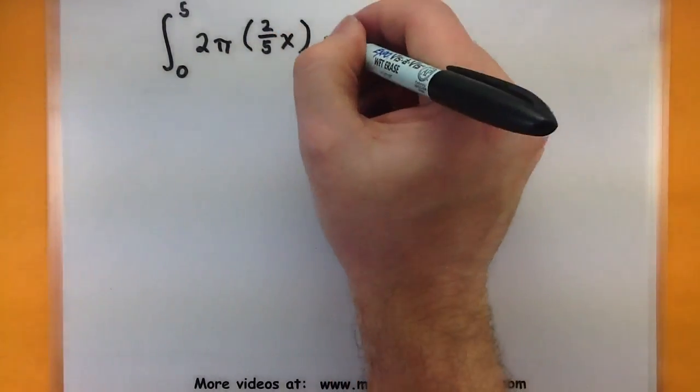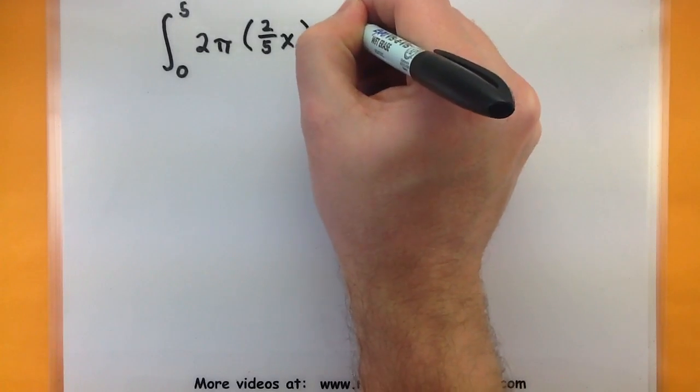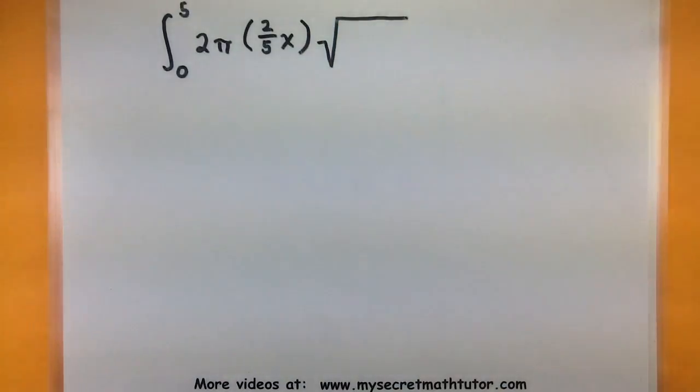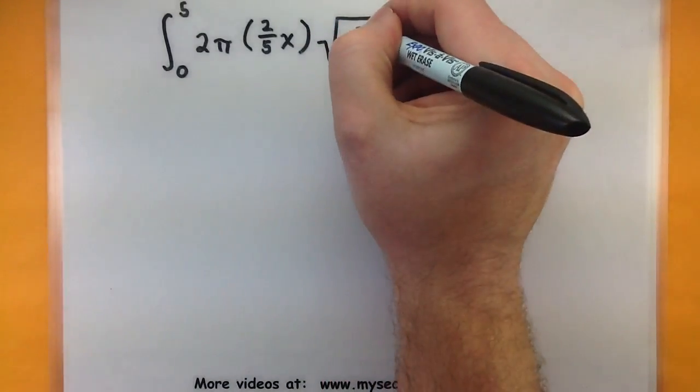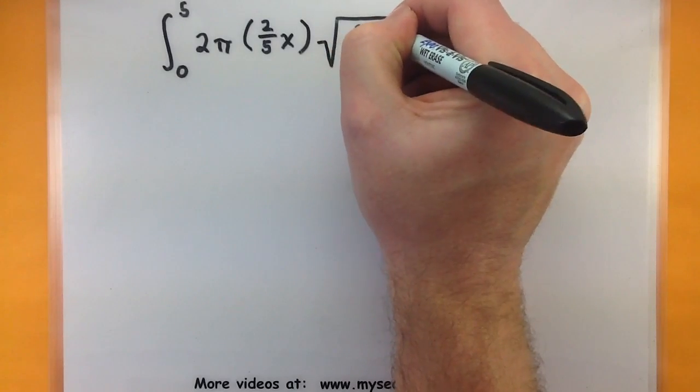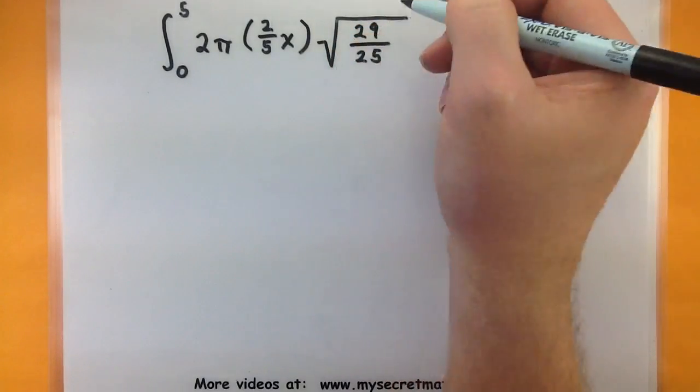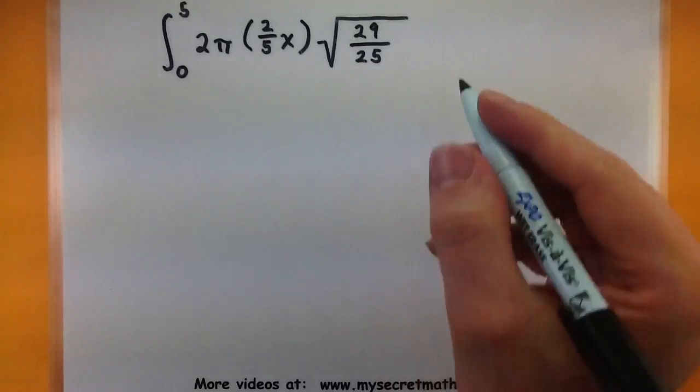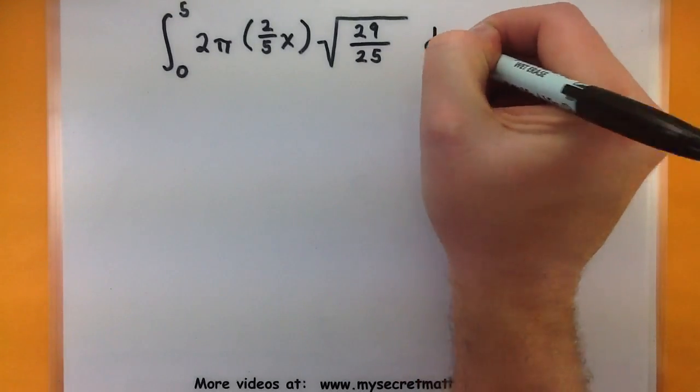Alright, now we have our arc length, so there's that big square root piece. And all of the work we did before is so I can put in that twenty-nine all over twenty-five. It saves us a lot of trouble later on. dx, and we're good.